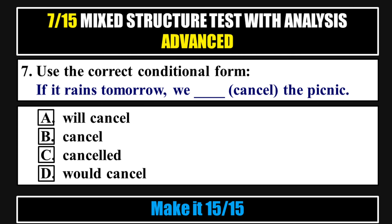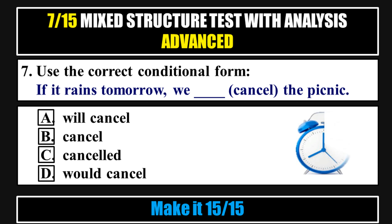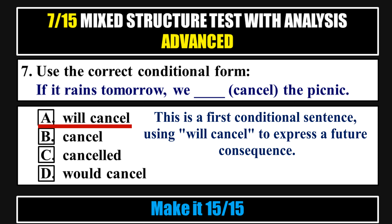Question 7. Use the correct conditional form: 'If it rains tomorrow, we ___ the picnic.' Options: a. Will cancel, b. Cancel, c. Cancelled, d. Would cancel. Answer: Will cancel. Analysis: This is a first conditional sentence using 'will cancel' to express a future consequence.